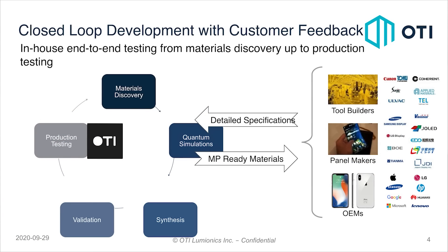OTI Lumionics does in-house end-to-end testing for materials, all the way from concept discovery to production testing in our miniaturized mass production line. We can do materials discovery involving product specification, concept, quantum simulations, synthesis and scale-up, and even bring materials in-house to test in a lab. What makes OTI fairly unique is that we actually have a mass production line, able to test materials by making hundreds of OLEDs and testing their reliability.